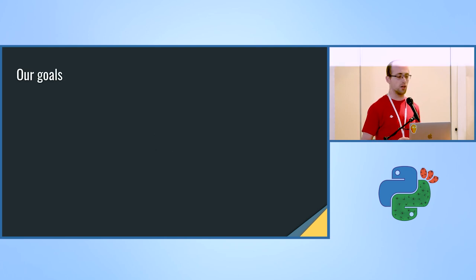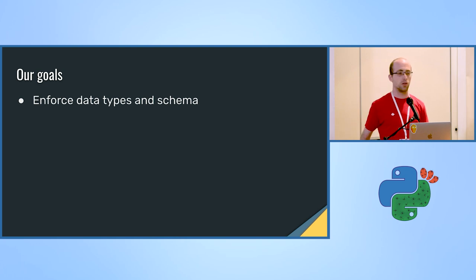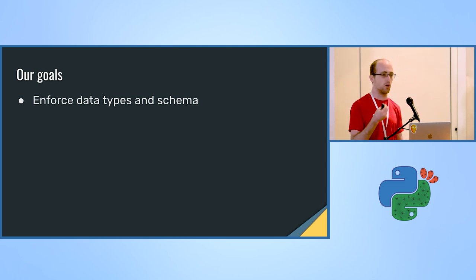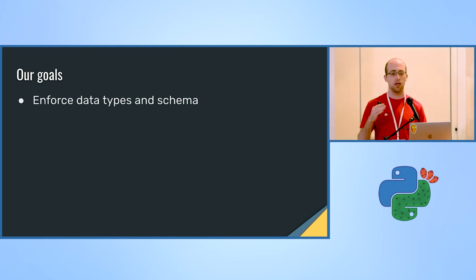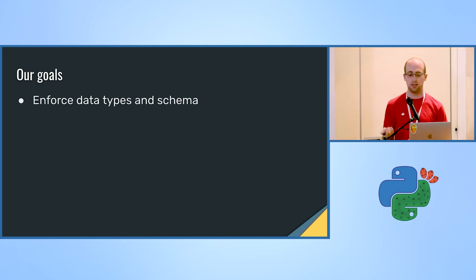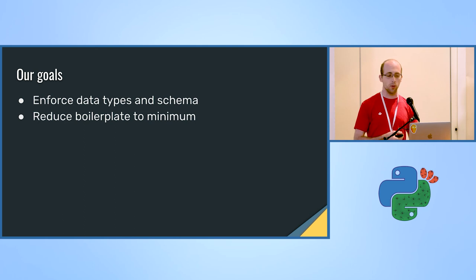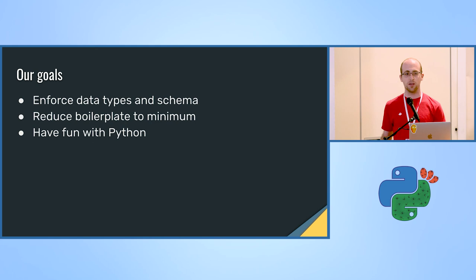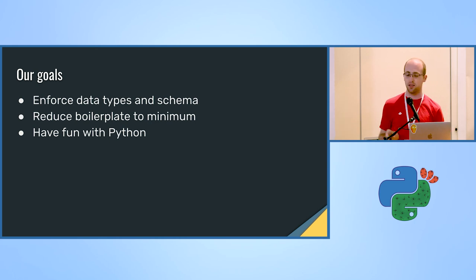Our goals today are: first, to create a system that enforces data type and schema, not only when inserting objects into the DB, but when assigning values to fields — catching errors as quickly as possible, not 300 lines of code later. Second, we want to reduce boilerplate to minimum — meaning zero — no Gremlin queries written by hand. And finally, we want to have fun with Python and do it in a fun, expressive way that enables us to do more things later.